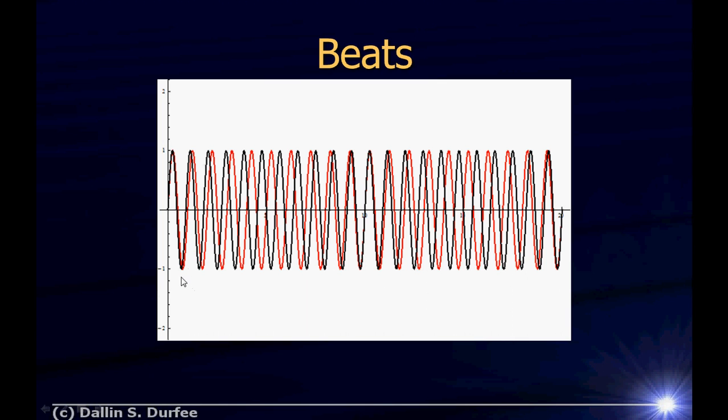But as time goes by, the black wave, it's a little bit higher in frequency, so it gets ahead of the red wave. Eventually the two waves are 180 degrees out of phase with each other. As time keeps going though, eventually the black wave is so far ahead that it's behind. In other words, by the time I get to the middle here, the black wave has oscillated by one complete oscillation more than the red wave, and they're back in phase with each other.